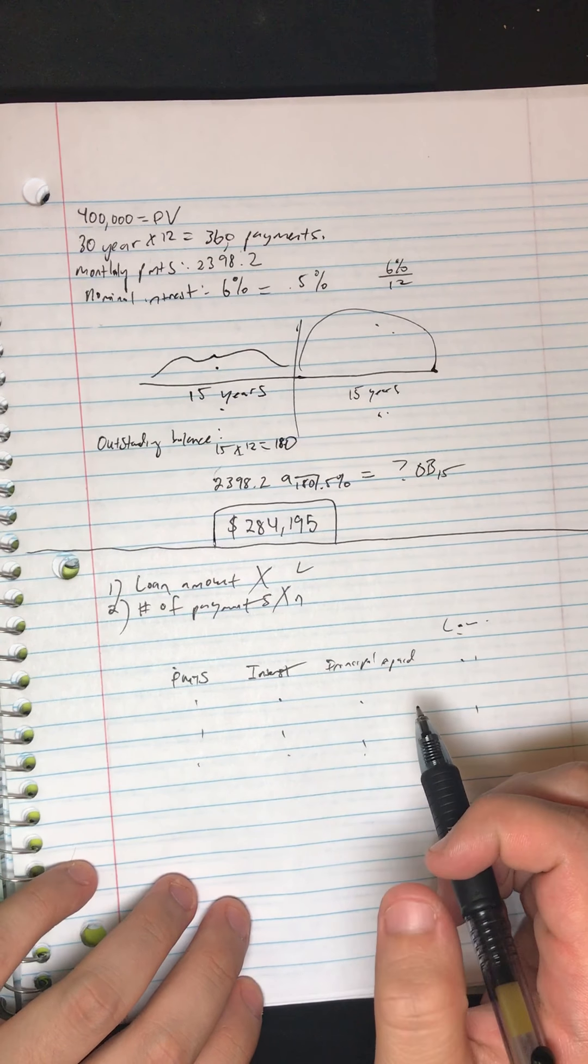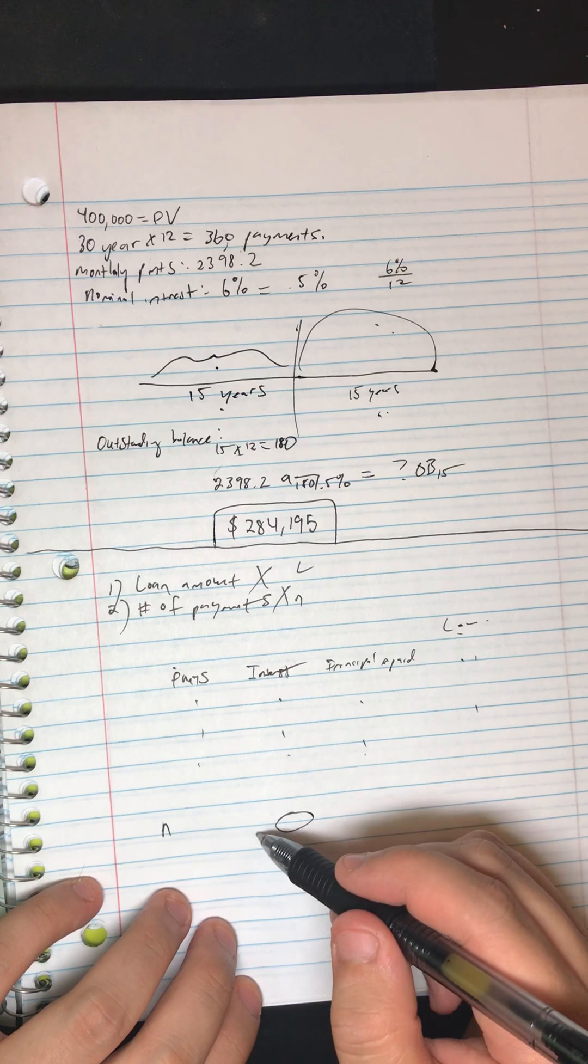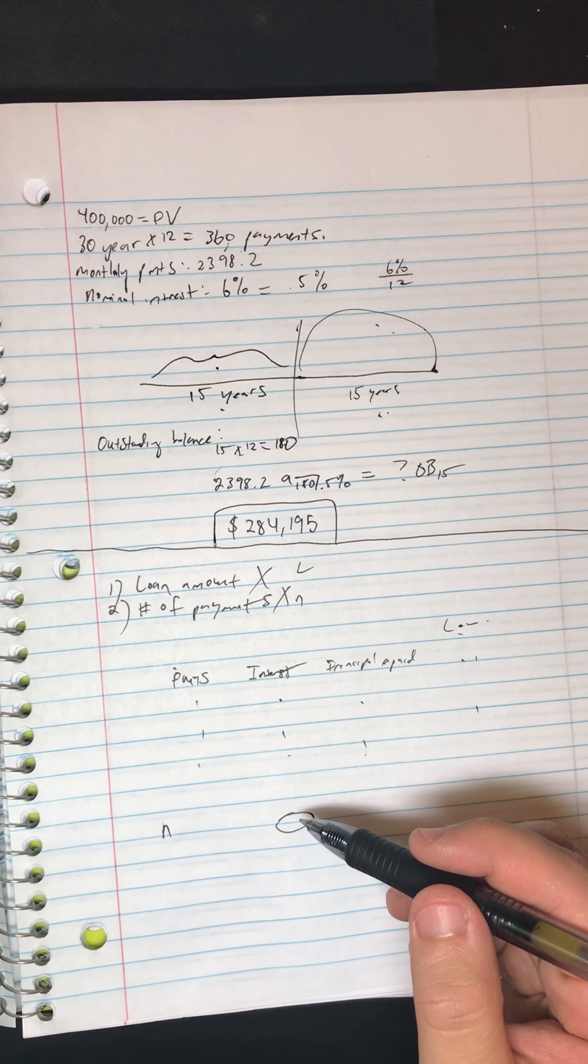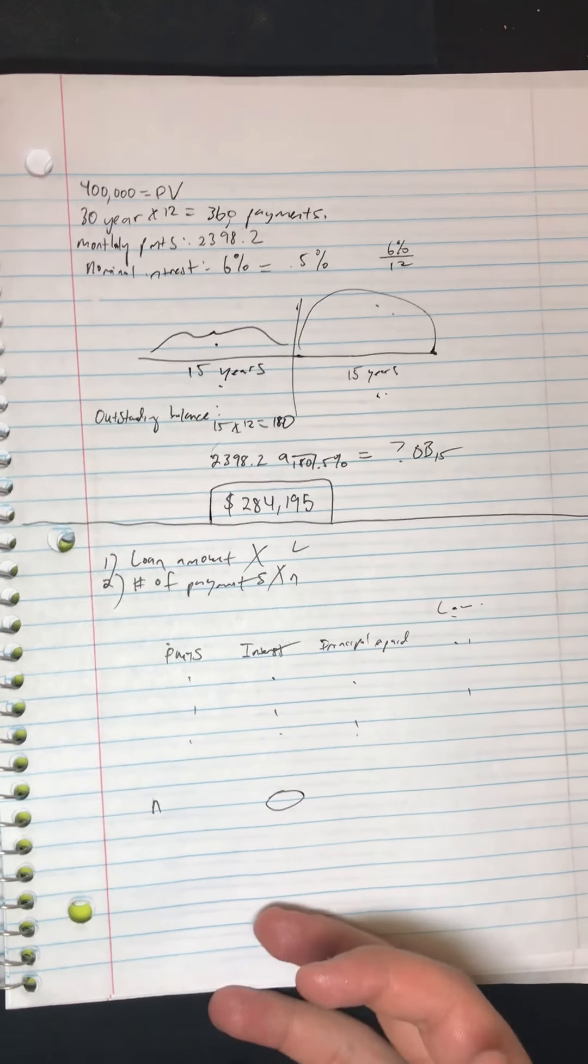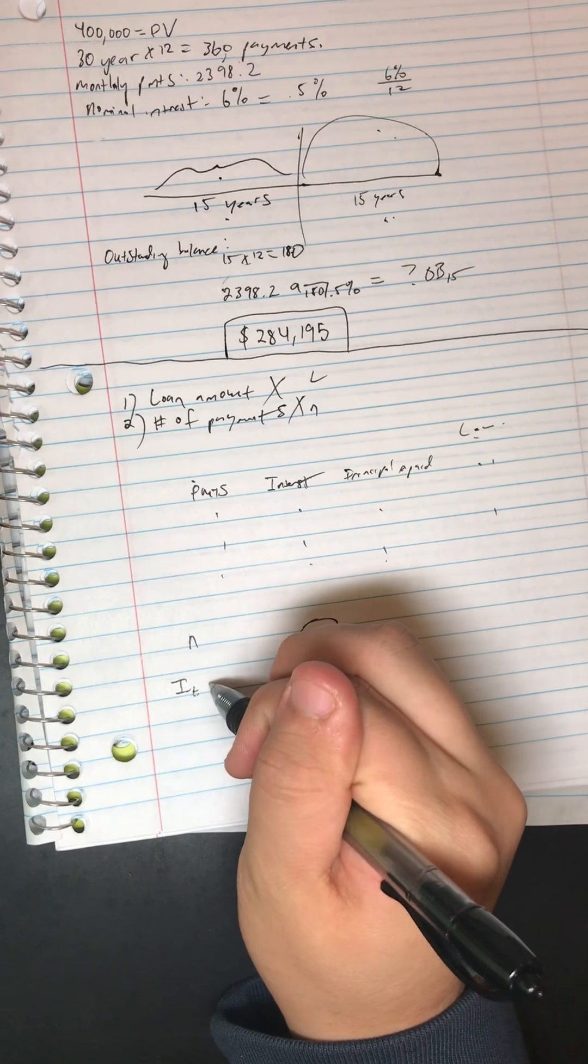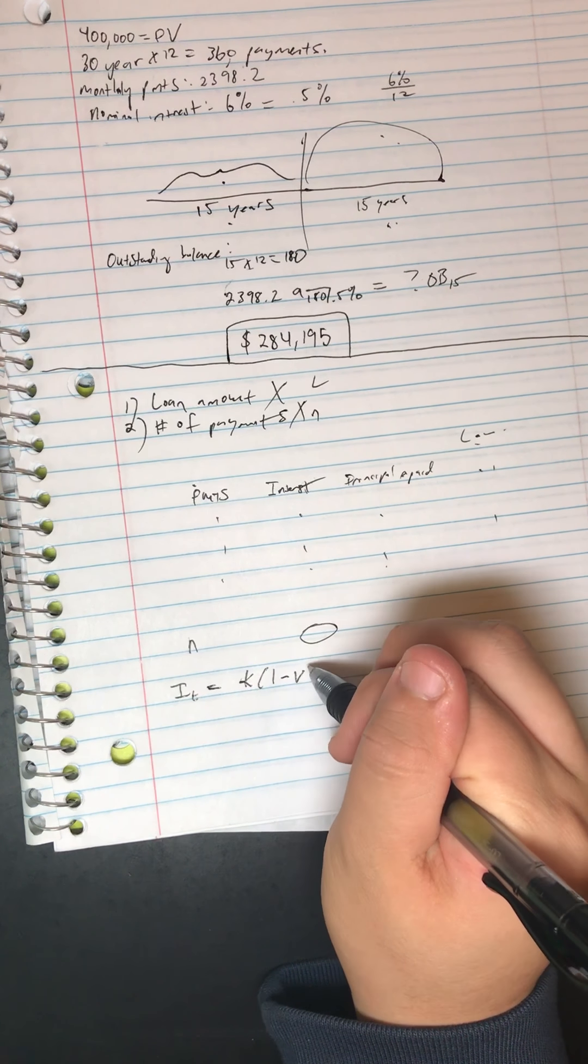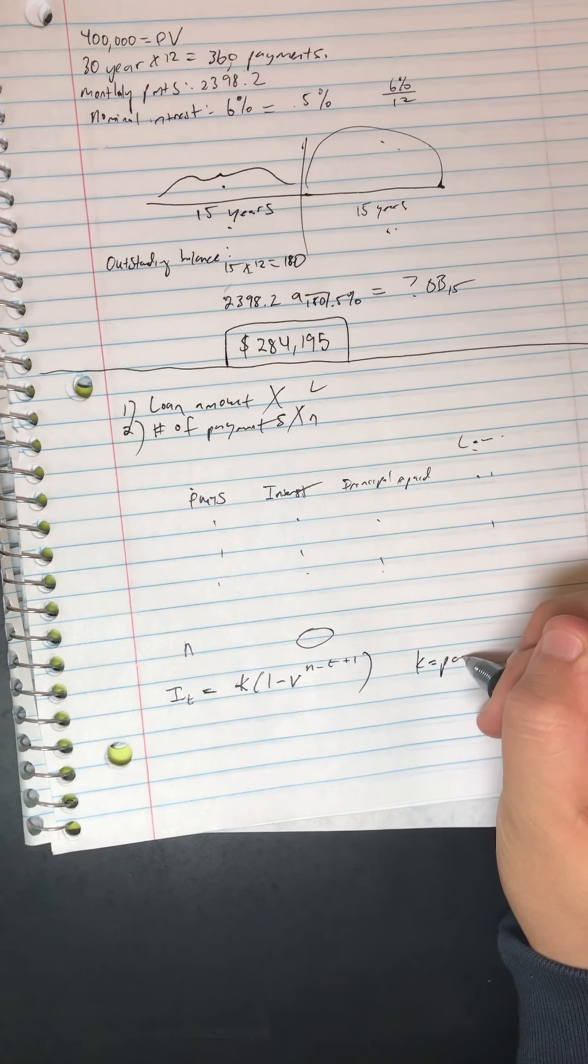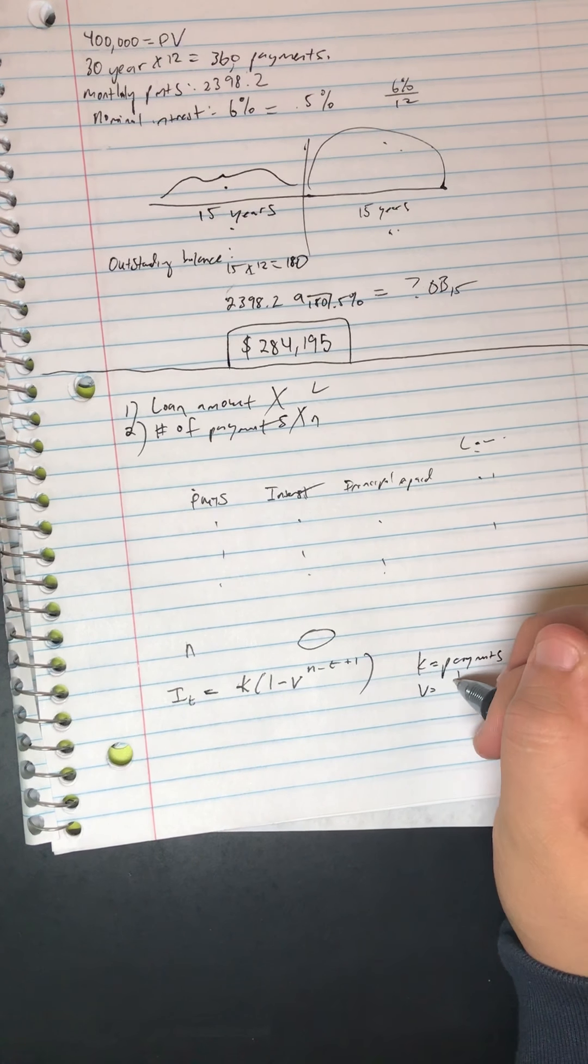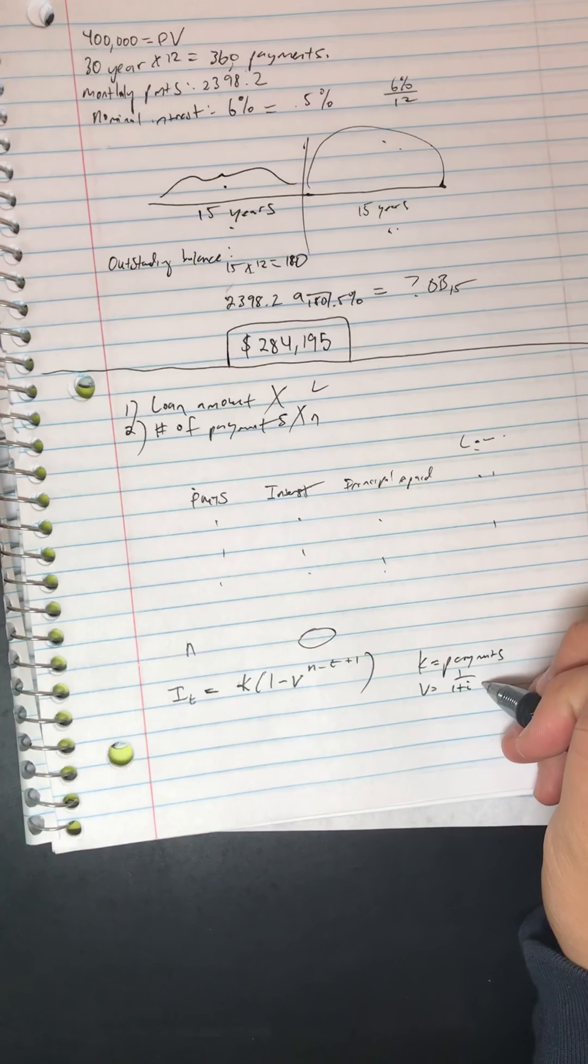If you visualize it, we need to find the interest paid at n, the final payment. So we need to use the formula I_t equals K times 1 minus v to the n minus t plus 1. K equals the payments, v is 1 over 1 plus i.